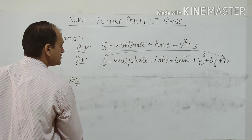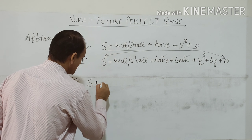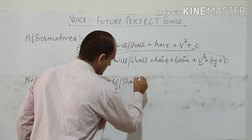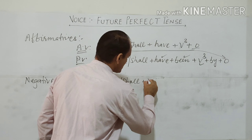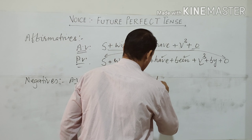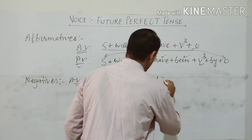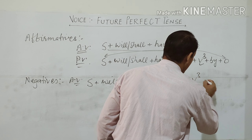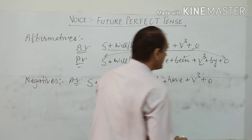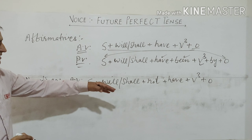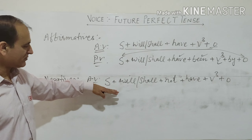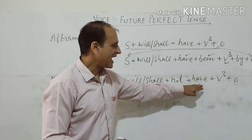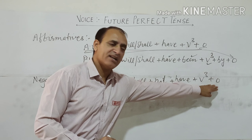Now negatives. For negatives, the active voice structure becomes: subject followed by will or shall, will and shall are followed by not, then we use have plus the third form of the verb, and then object. So our negative structure for future perfect becomes: subject + will/shall + not + have + third form of verb + object.